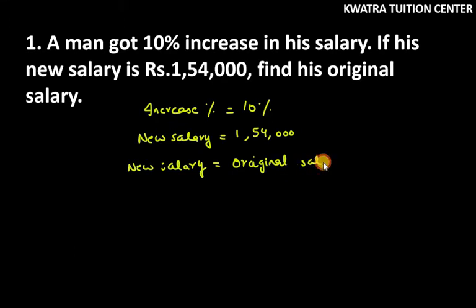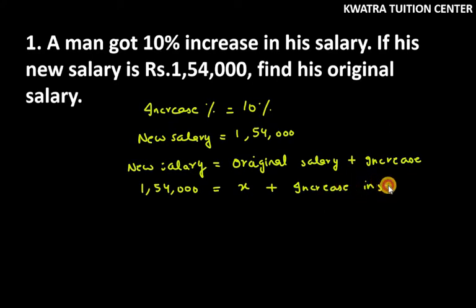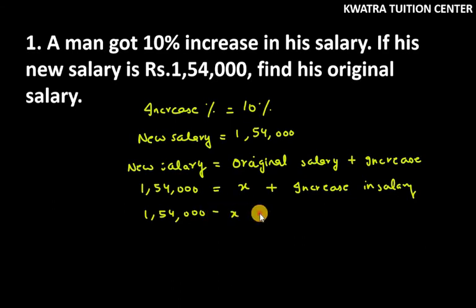But the original salary is unknown, so we will take it as X. The new salary is 154,000. The original salary is X. The increase that happened in the salary — we need to find that. So, the increase in salary will be 154,000 minus X. This is our increase in salary.